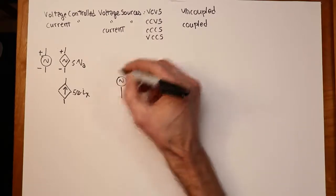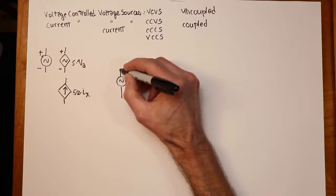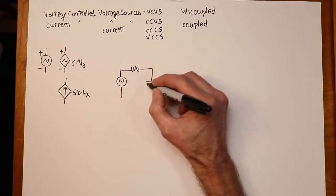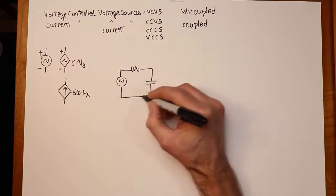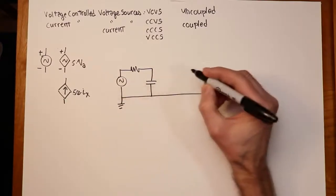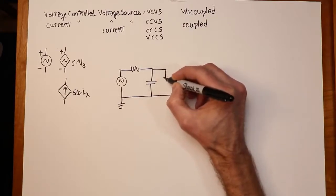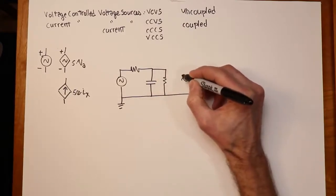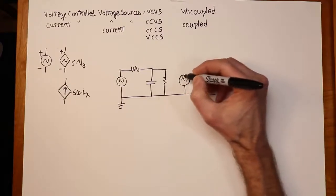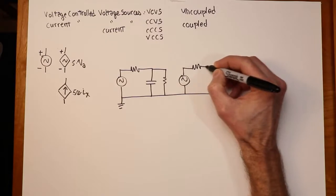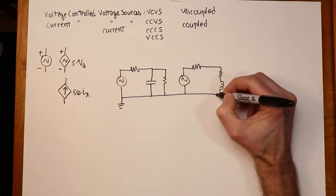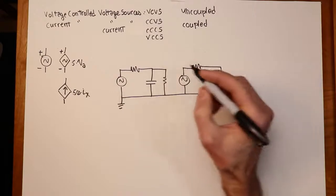So I'm going to have a voltage source over here, a normal independent source. We'll just hook up some RLC components to this. Here's my ground. I'll put a resistor over here, let's say, another source over here. This is going to be our dependent source. So I have a bunch of components over here. Let's call this VS.